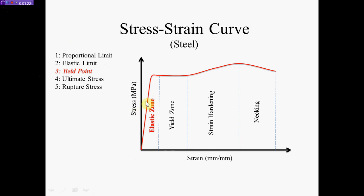The reason why this is a straight line is because the load and the strain are proportional to each other. If you want to define the proportional limit, you would take a straight edge and place it along the straight line part. Where the graph starts to deviate from that straight line is the proportional limit — that's number one right there.